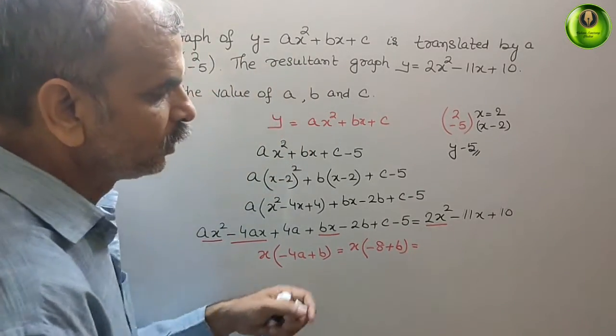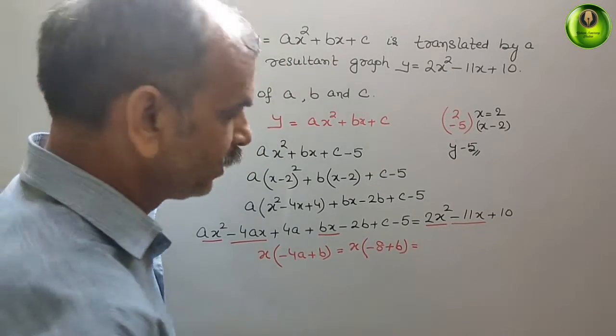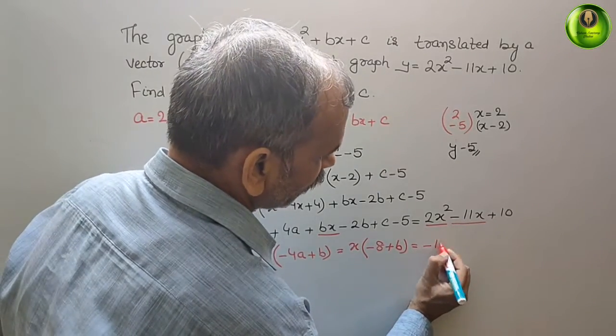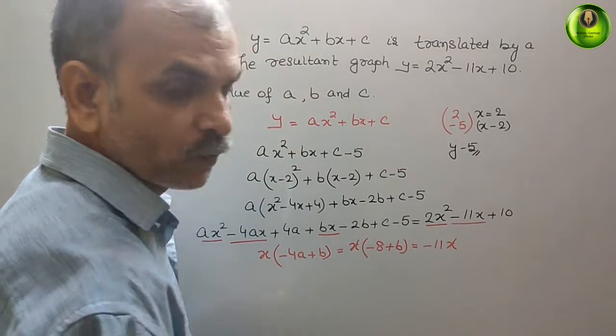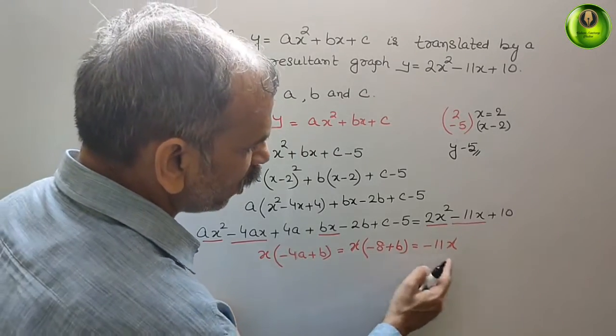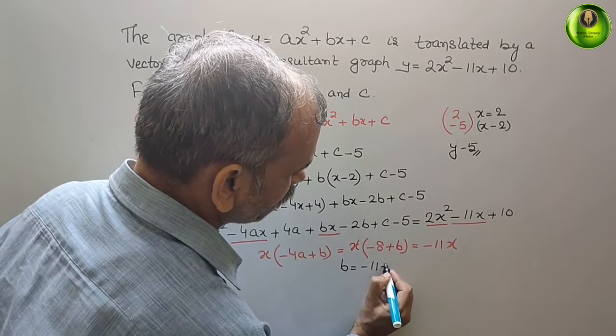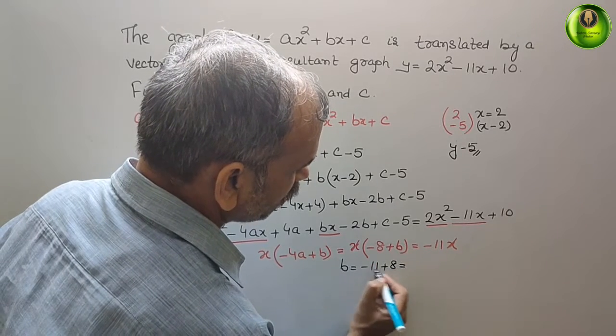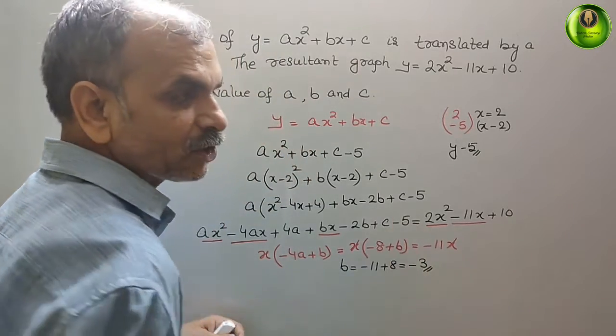That is equal to—see, it is minus 11x. So here it will be minus 11x. So therefore we can say: minus 11 equals minus 8 plus b. That is b equals minus 3.